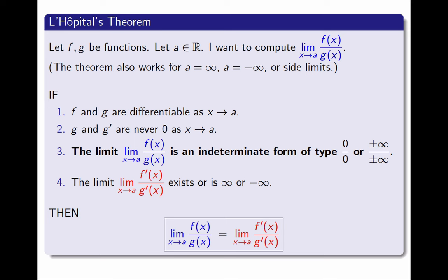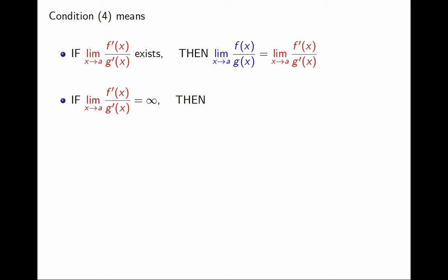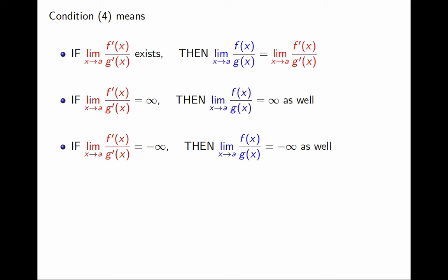Let me elaborate on this, because as I said, this is something we often forget. This means that if the second limit, the limit of f' over g', exists, then I can conclude the limit of f over g also exists and is equal. If the limit of f' over g' is infinity, then I can conclude the limit of f over g is infinity as well. If the limit of f' over g' is minus infinity, then I can conclude the limit of f over g is minus infinity.